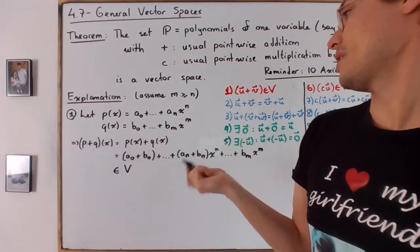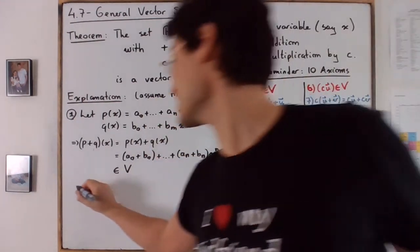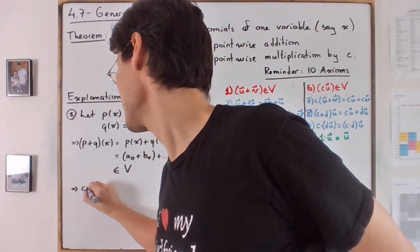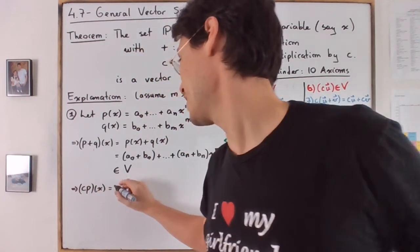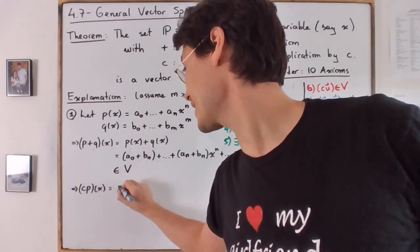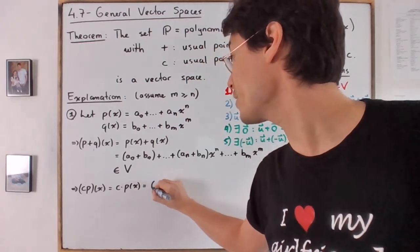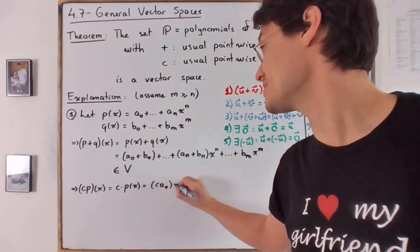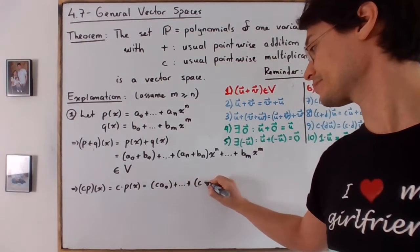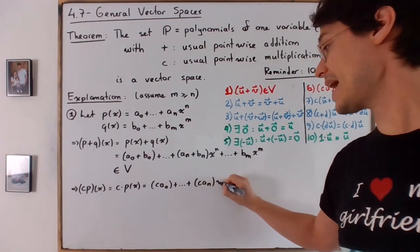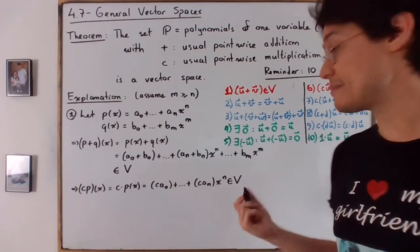So this is an element of v. And the same for just like c times u, like c times p of x. So c times p of x, the way it is defined, again, it is just like c times p of x. So in other words, all the coefficients you multiply by c. So c a zero plus all the way up c a n x to the power of n. And as you can see, this is also an element.